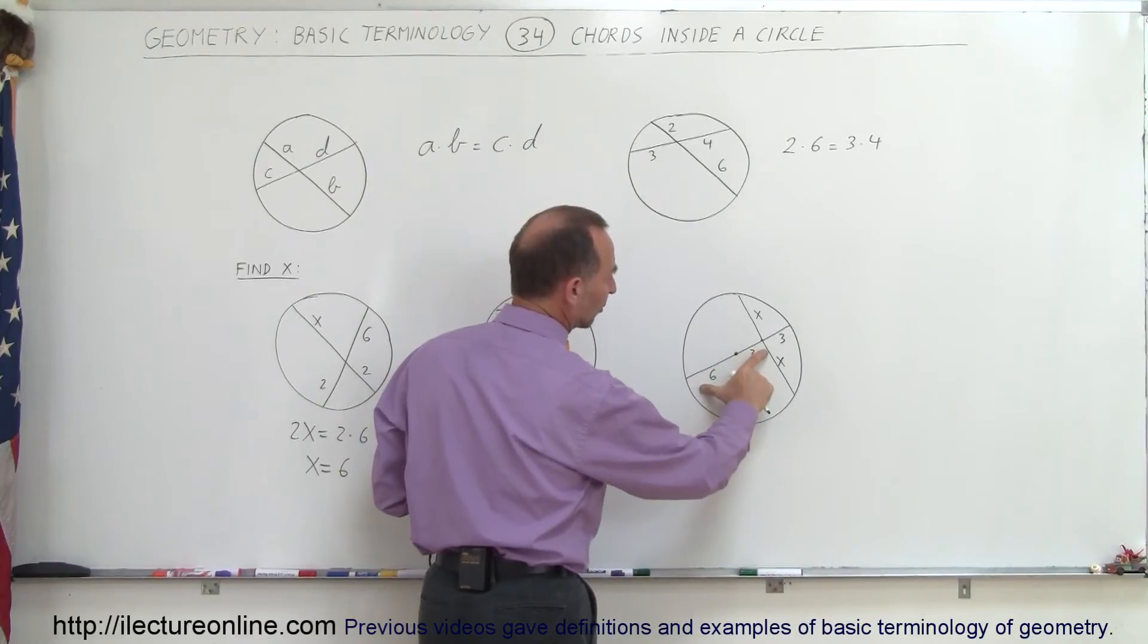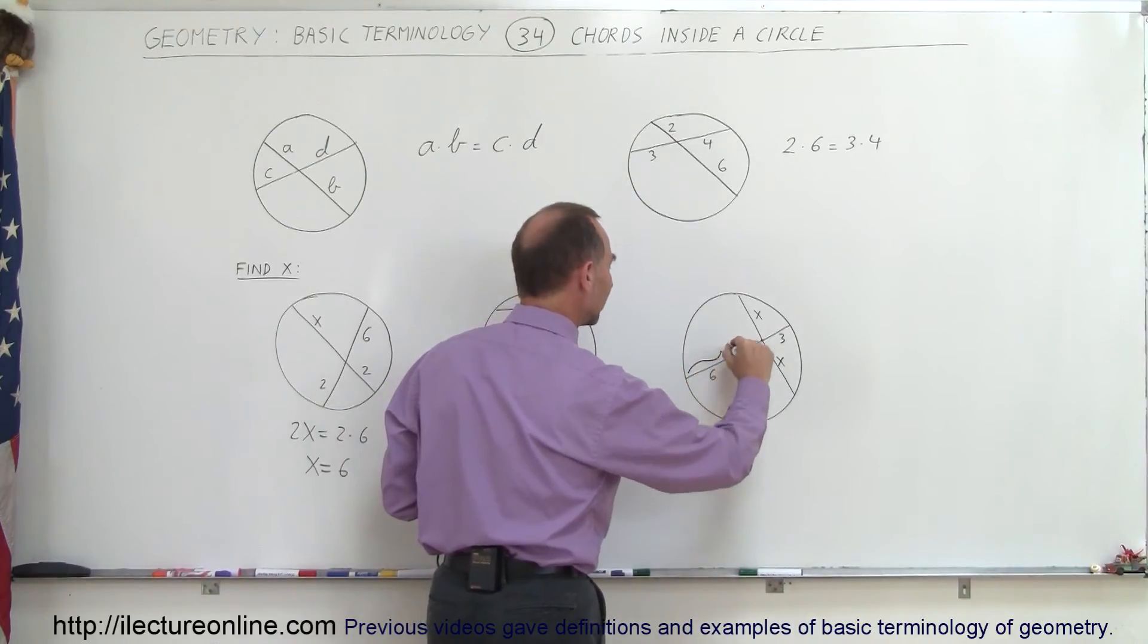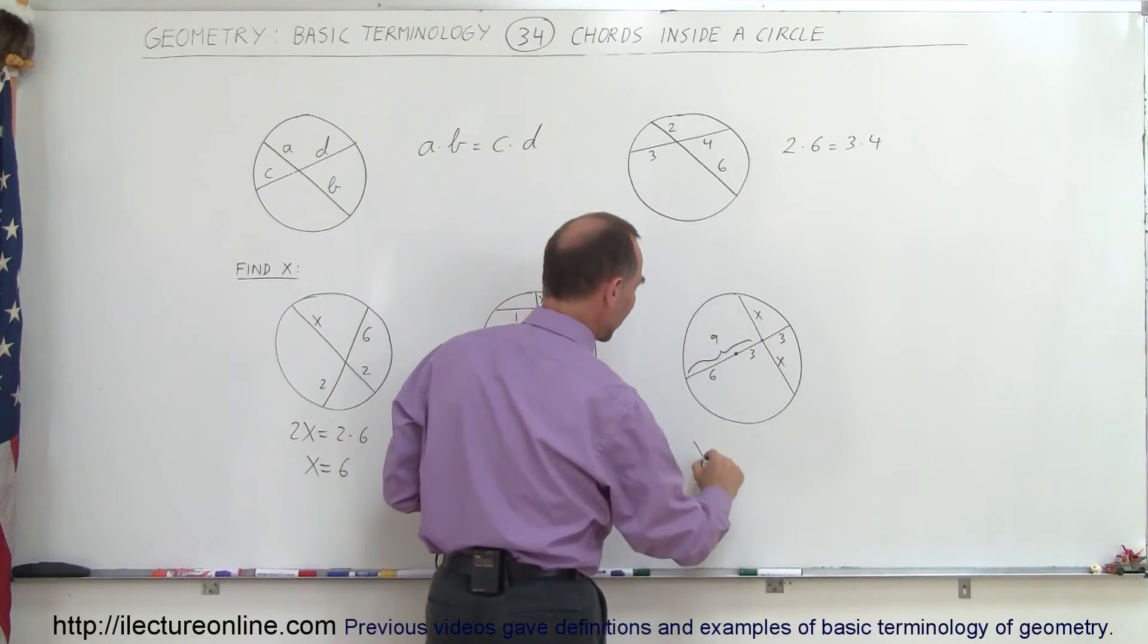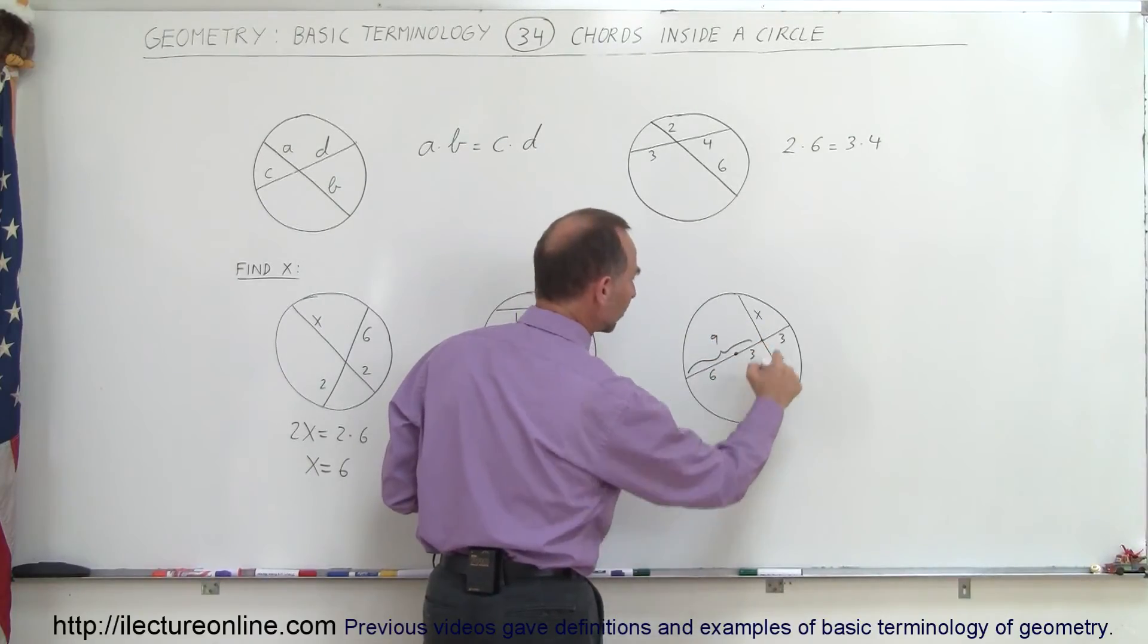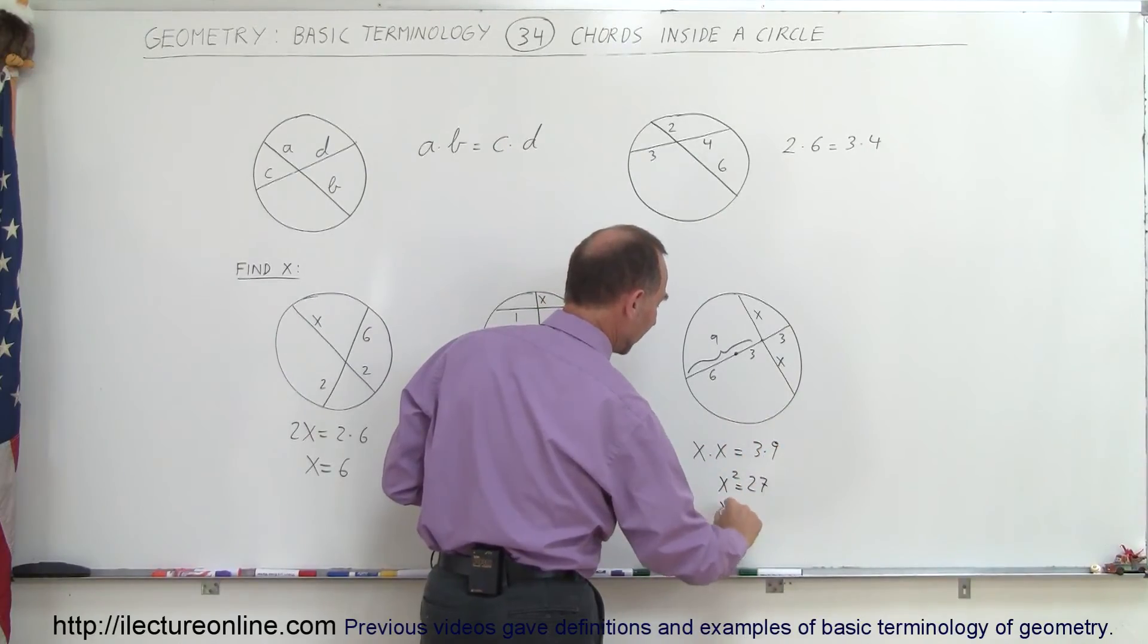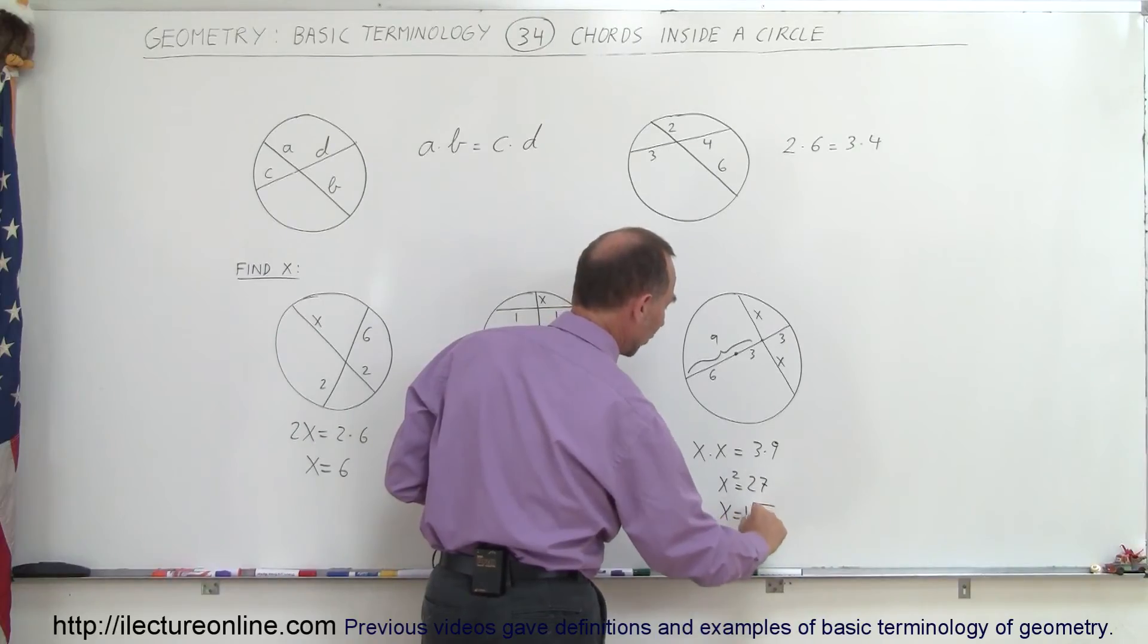And here we can see that the length here is 6 plus 3, which is 9. So this length here together makes 9. So we can say that X times X is equal to 3 times 9. Which means that X squared is equal to 27 and therefore X equals the square root of 27.